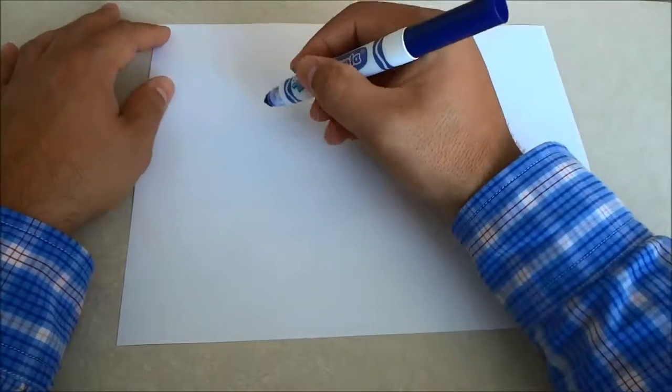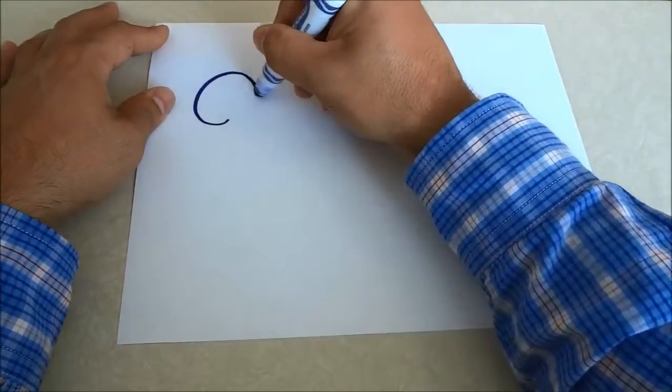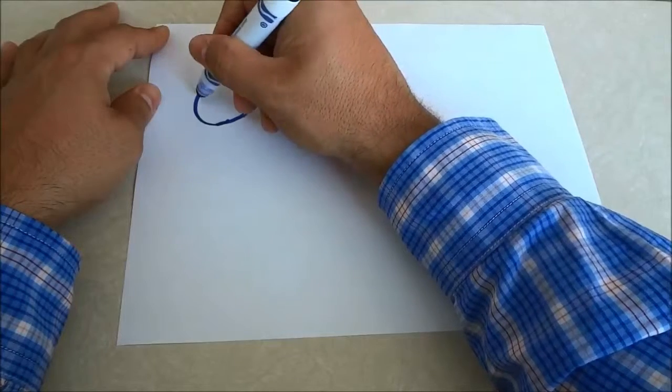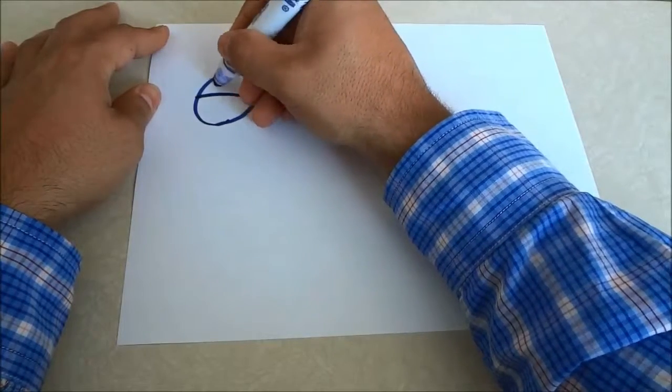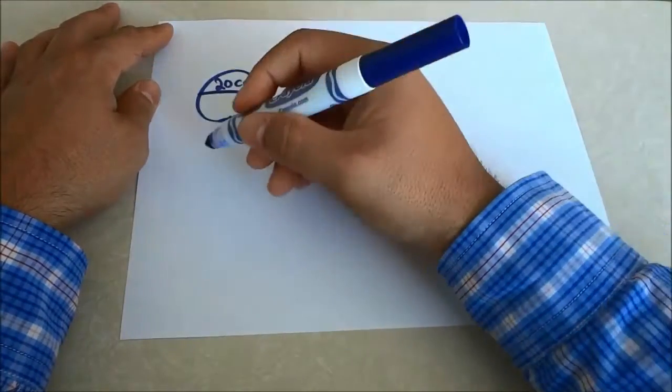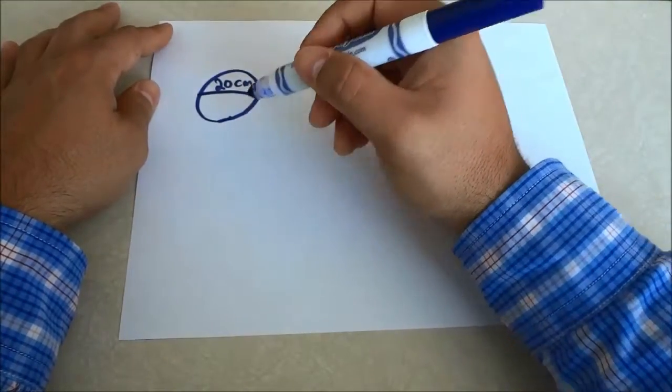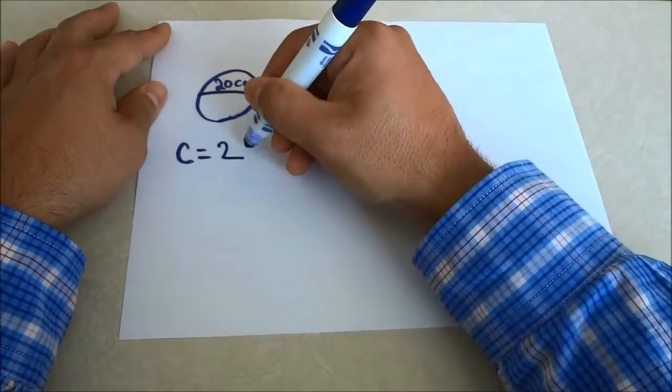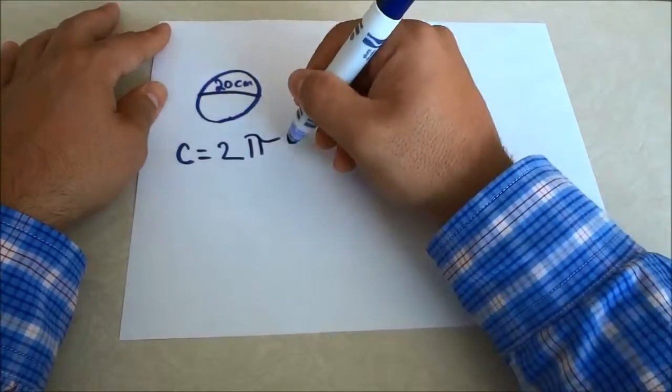Let's imagine we have a circle right over here with a diameter of 20 centimeters. The equation for the circumference of a circle is circumference equals 2πr.